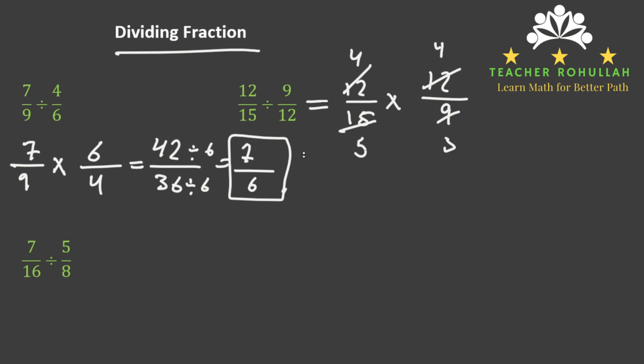Now 4 times 4 is 16, and 3 times 5 is 15. This is the answer to our problem in which we divide 12/15 by 9/12.